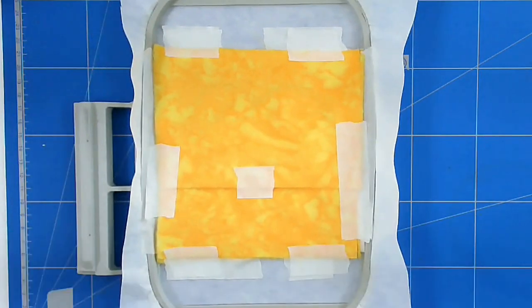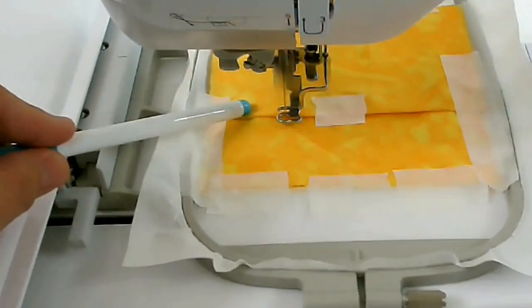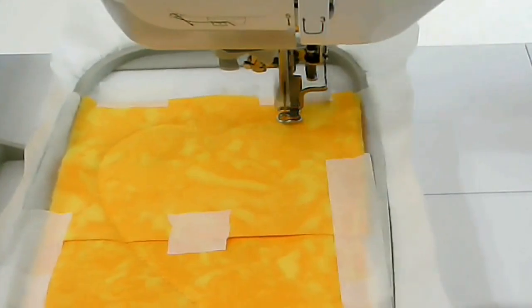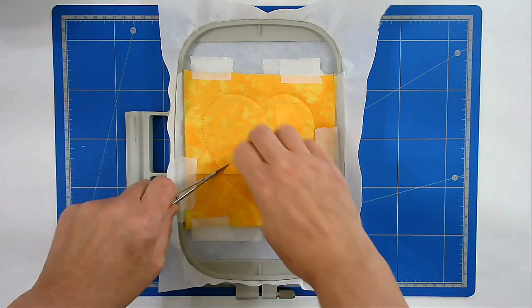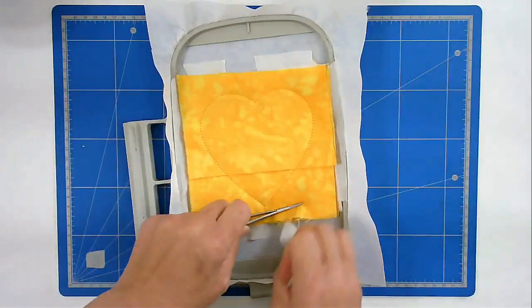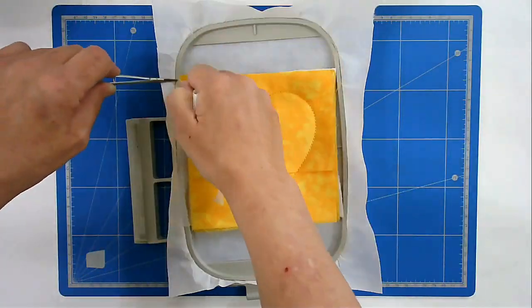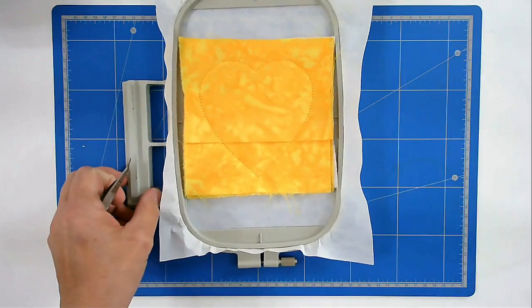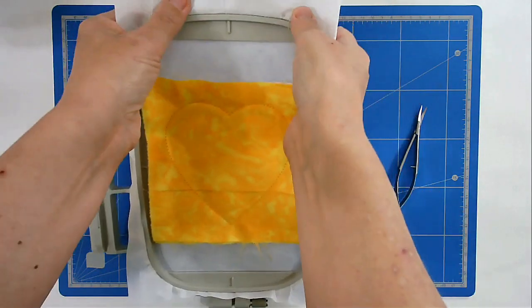I'm now going to pop that into my machine and stitch round number 10. I've changed my thread to yellow to match my fabric. I'm going to remove all the tape and now I'm going to free this from the hoop.